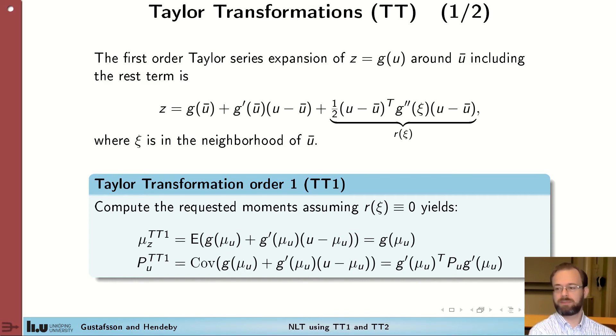If we do the same thing for the covariance expression, so covariance of the linear term here, you have a bunch of cancellations in a similar way, but we get the following part to stay. So the derivative of g transpose times the covariance of u times derivative of g again. These two expressions make up the TT1.